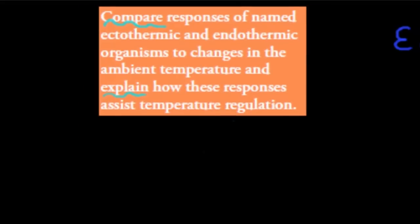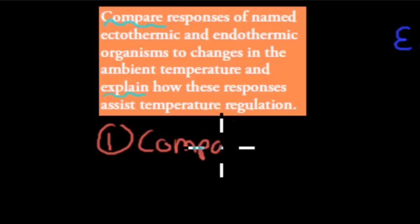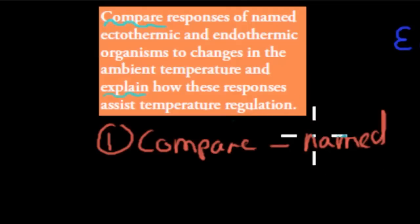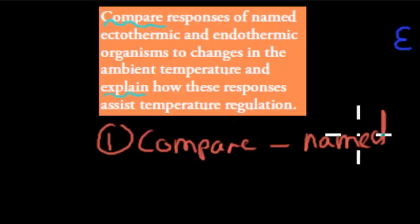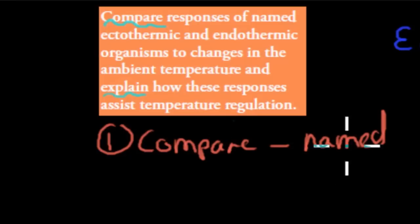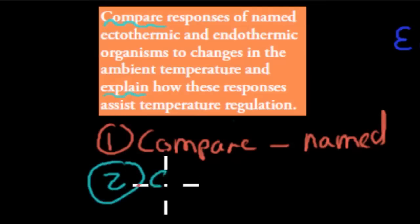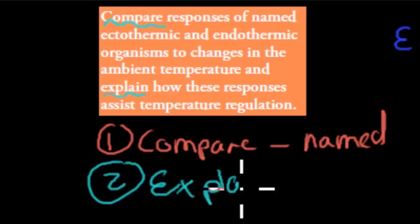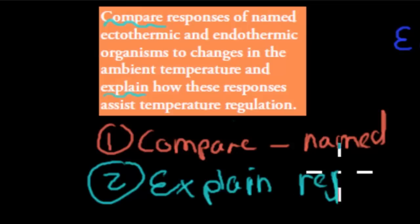There are two parts: we have to compare named ectothermic and endothermic organisms, so we actually have to give two examples — one of an endotherm and one of an ectotherm by their actual name. For example, we will use the red kangaroo and the blue-tongued lizard in this video. We also have to explain how these responses help maintain body temperature.